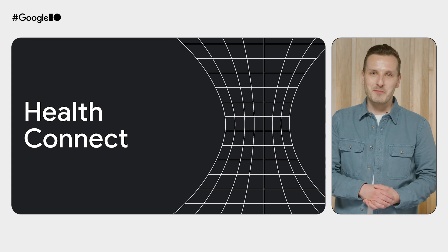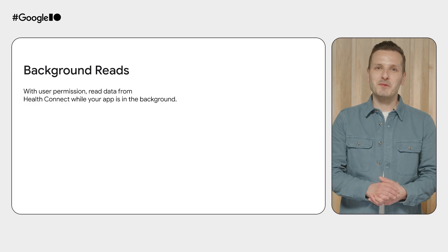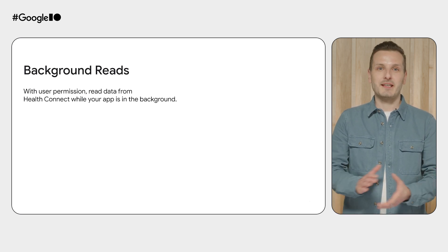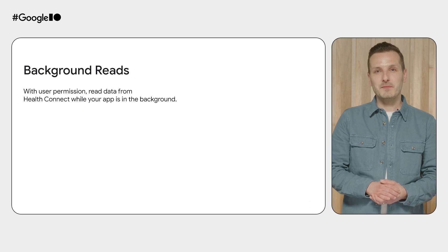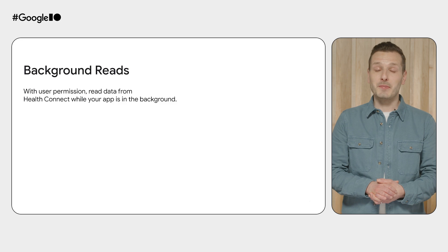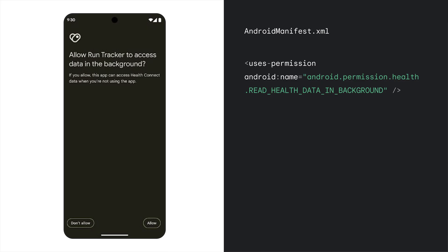I'm excited to share two new capabilities that are coming to Health Connect this year. Today, apps can only read from Health Connect while in the foreground or while running a foreground service. Coming soon, with user permission, you'll be able to read data from Health Connect while your app is in the background. With this new functionality, you can keep your app up to date while users get other things done on their phone. For example, a nutrition app could update your meal plan based on the workout you just completed. You'll need to specify in your app's manifest that your app can read health and fitness data in the background. At runtime, users can allow or deny this request. Once allowed, your app can read data in the background. To help preserve the device's battery life, your app can read data in the background only once every 30 minutes.